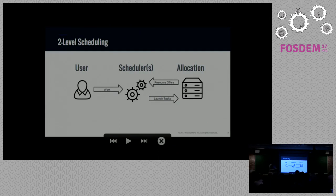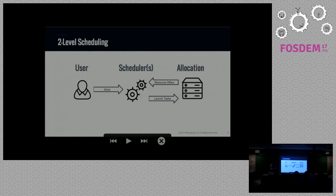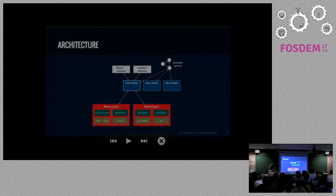The way Mesos handles this is through a concept called two-level scheduling. Mesos basically just deals with resource allocation, and then for each particular framework we have a scheduler — the component controlling which resources are used in the cluster and how to react when nodes fail. There's even a default scheduler, so for the Neo4j example we didn't have to write a scheduler; the default one takes care of scheduling, restarting, and failure handling.